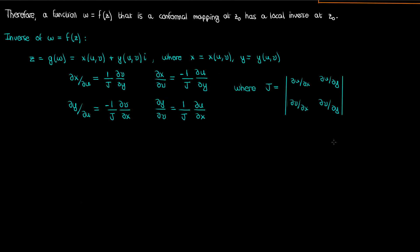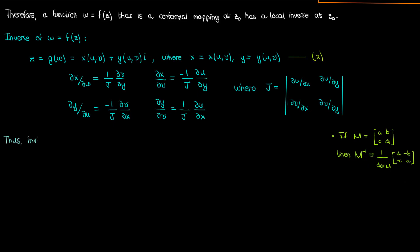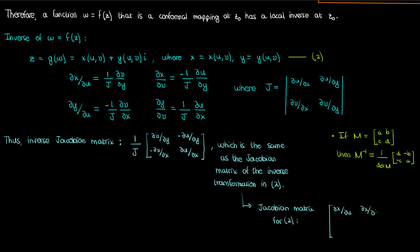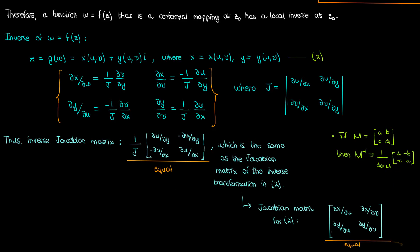To see where these partial derivative formulas come from, recall that for a 2x2 matrix m with entries a, b, c, d, the inverse is given by 1 over the determinant of m times the matrix with d and a switched and b and c negated. Using this rule, the inverse of the Jacobian matrix is given by the corresponding expression. The inverse Jacobian matrix is the same as the Jacobian matrix of the inverse transformation from u, v to x, y. Since these matrices are equal, their corresponding elements are equal, giving us the four partial derivative equations for the inverse.